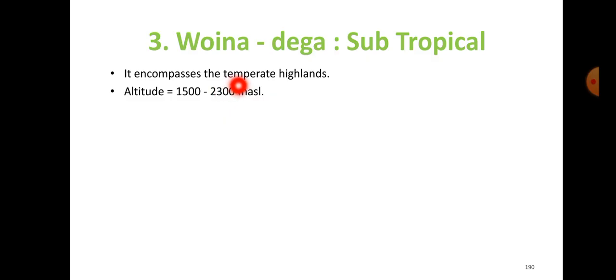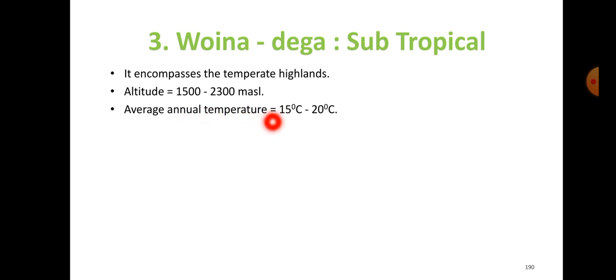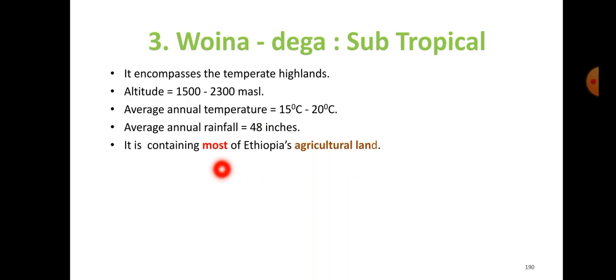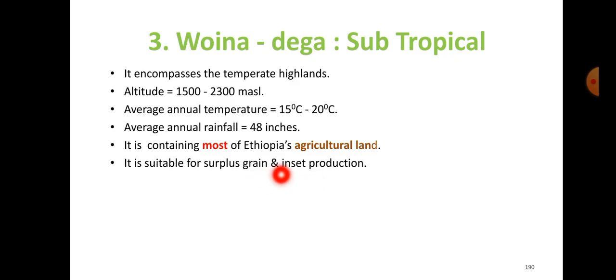Weyna Daga encompasses the temperate highlands. The average annual rainfall is around 438 inches. It contains most of Ethiopia's agricultural land and is suitable for surplus grain and enset production.